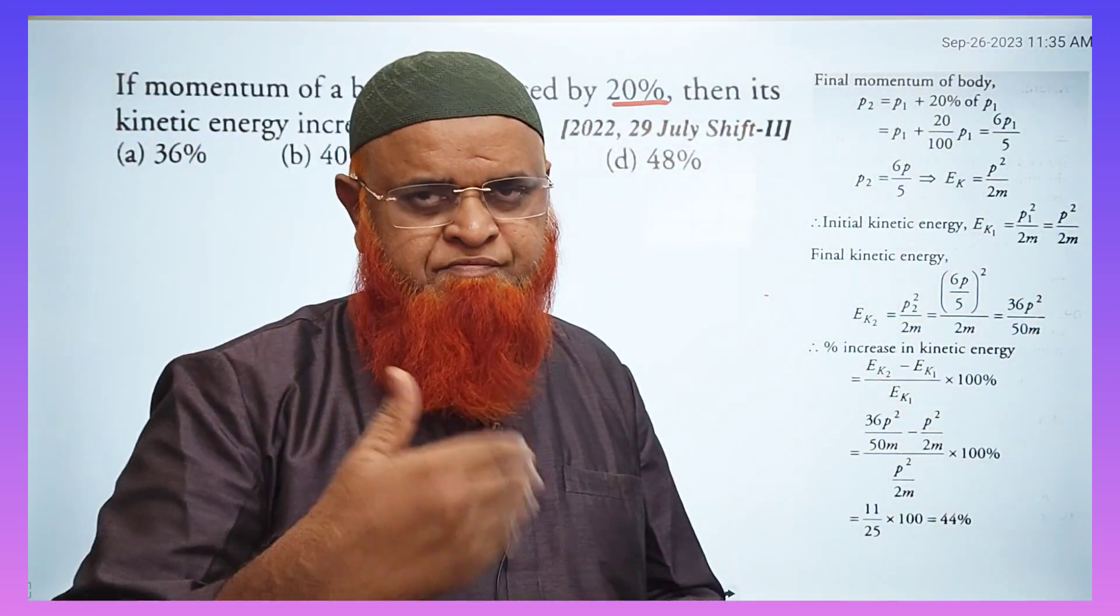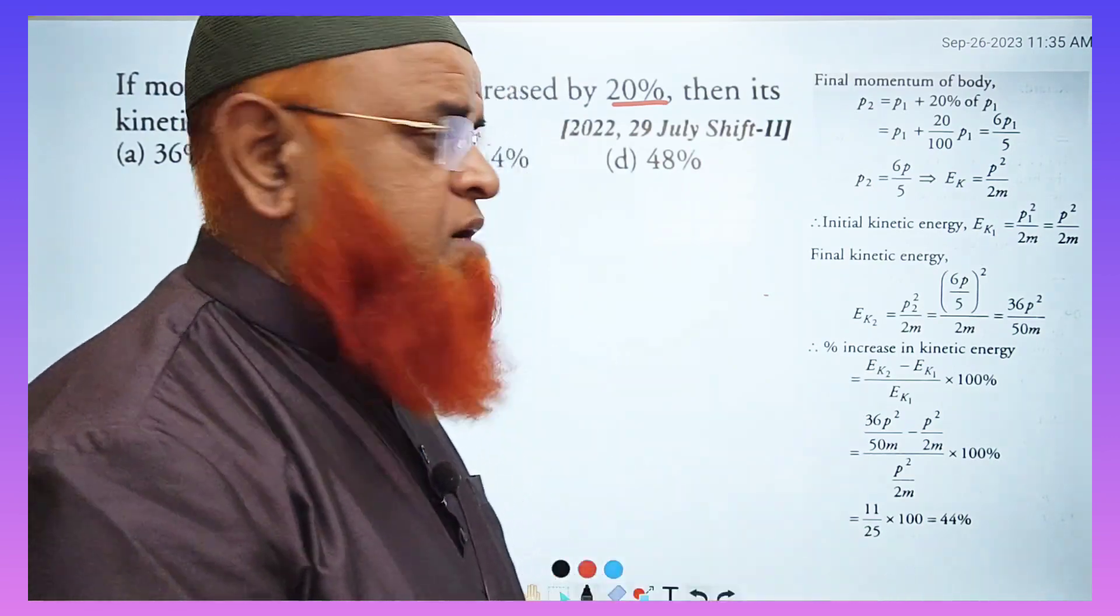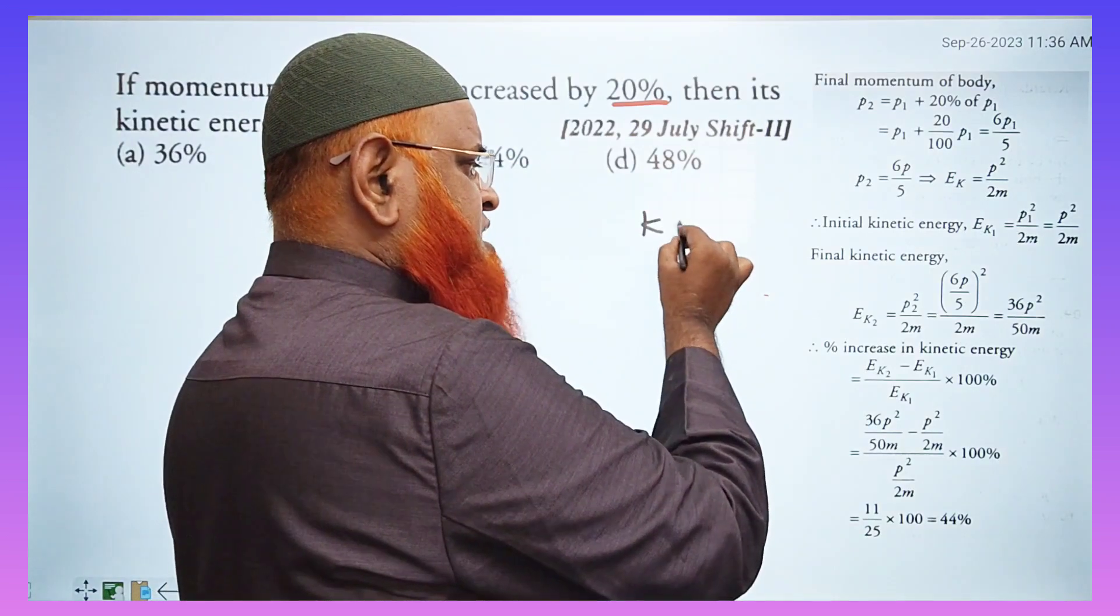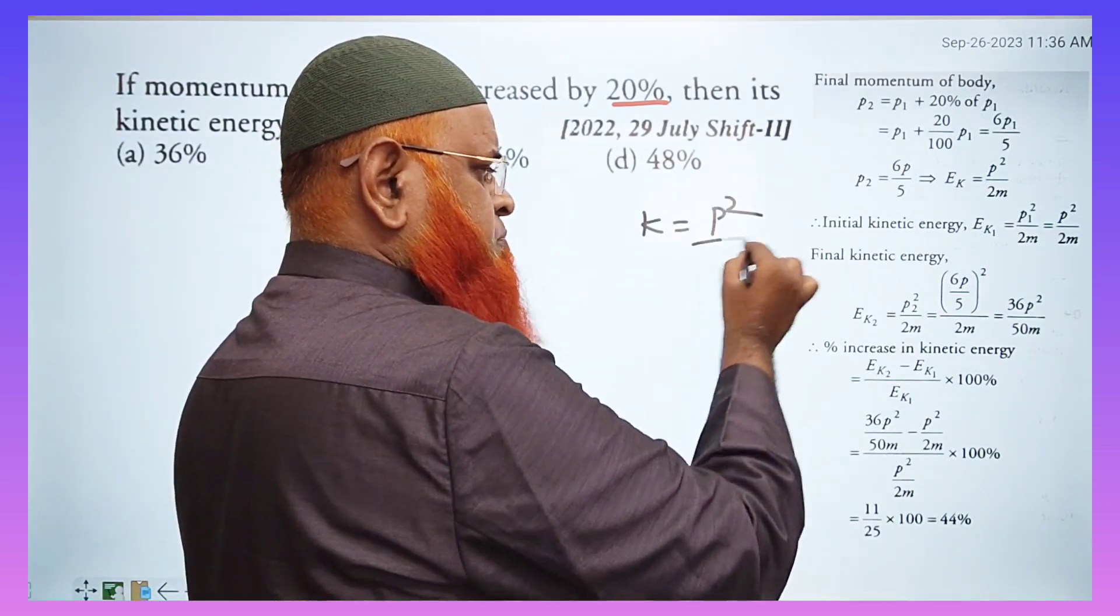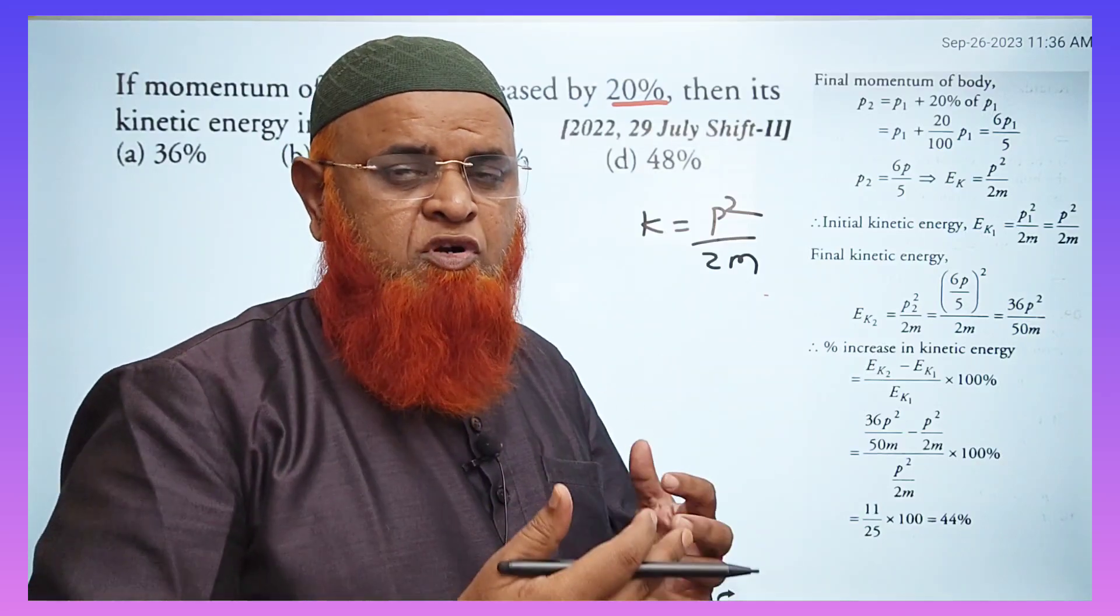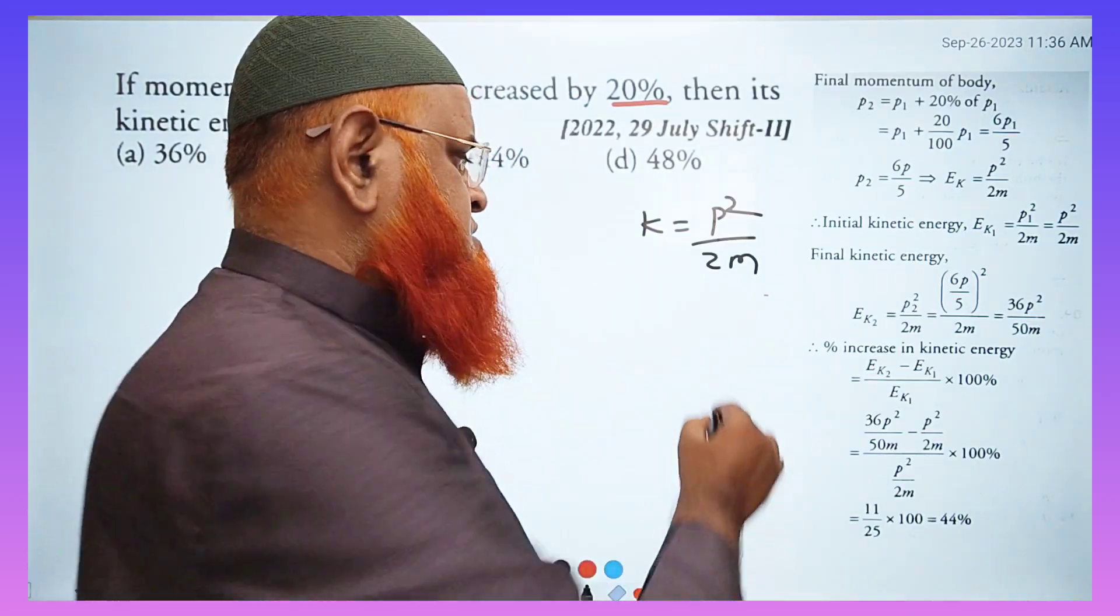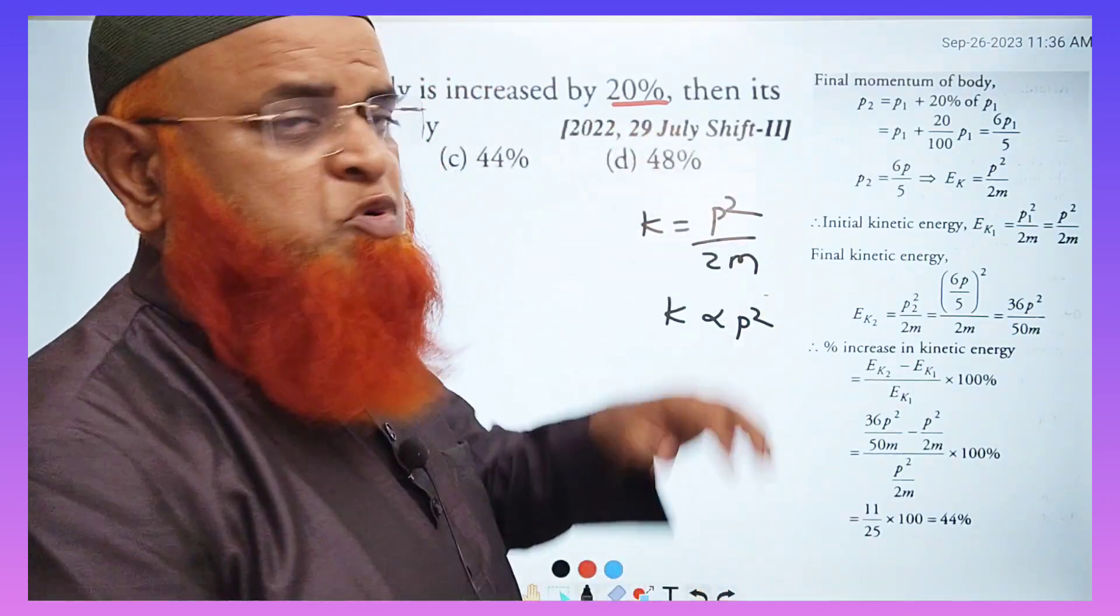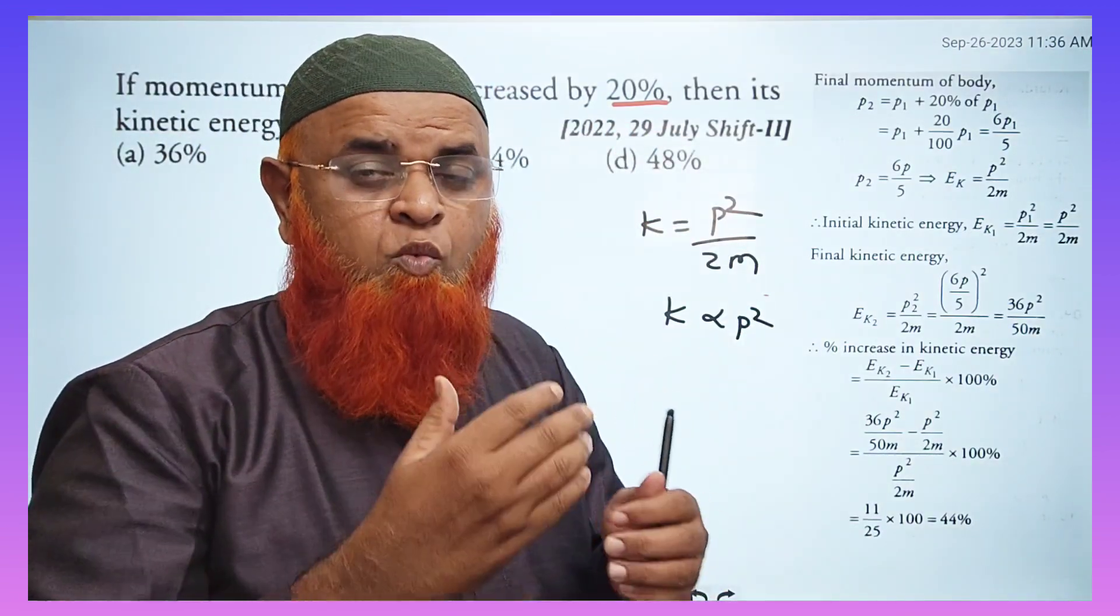If the momentum is 20% extra, kinetic energy and momentum is equal to p squared by 2m. So kinetic energy is directly proportional to p squared. Directly proportional to the whole square. So momentum 20% extra means it is becoming 120%.